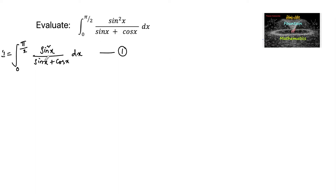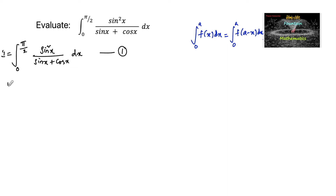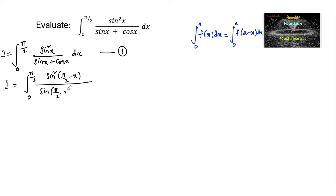Since here two trigonometric functions are complementary to each other and the limits are 0 to π/2, let us use the property: ∫₀ᵃ f(x)dx = ∫₀ᵃ f(a−x)dx. So let us write the integral using this property: I = ∫₀^(π/2) sin²(π/2 − x) / [sin(π/2 − x) + cos(π/2 − x)] dx.